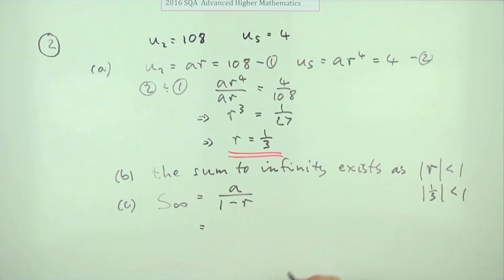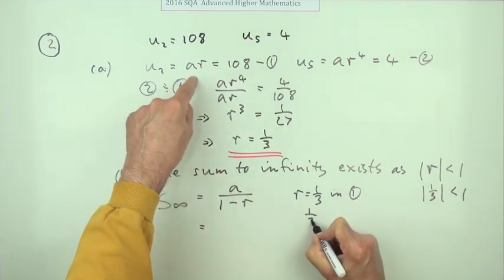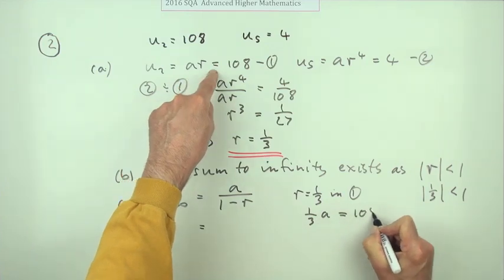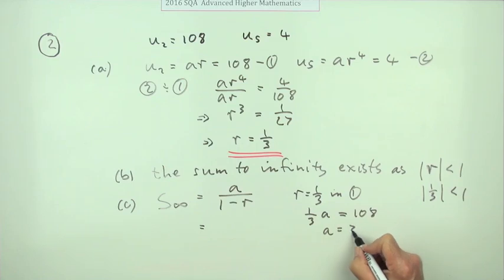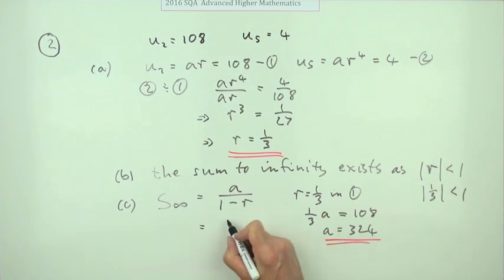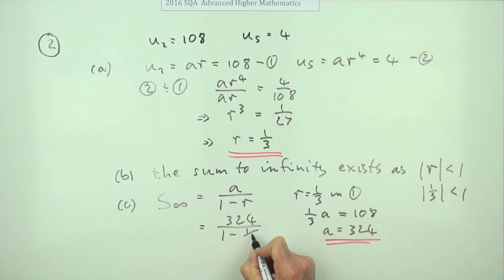But I don't know A. So I'll have to pop that R equals a third back into one of these. I'll put it into one which says one third of A equals 108. So A equals three times that, 324. Putting it to this formula, 324 over one minus a third. 324 over two thirds. Three times the top there would be 972. Halving that, 486. The sum to infinity is 486.